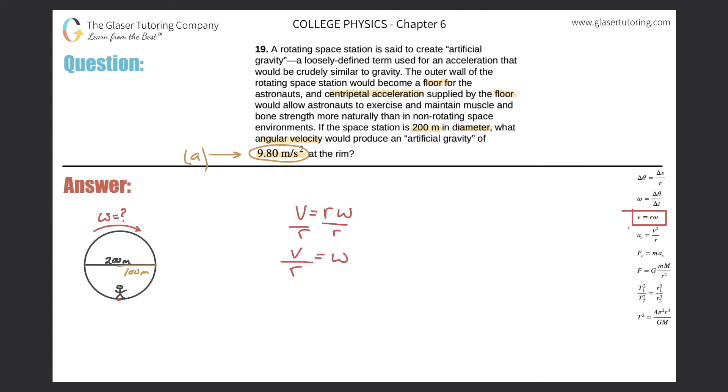Now the only problem with that is that it's not solved for the linear velocity. No big deal though. We know algebra. So let's simply take that formula and solve it for v. When we do so, cross-multiply these two terms, so that becomes ac times r is equal to v squared. Now just take the square root of both sides. So we see that the square root of the centripetal acceleration multiplied by the radius will give me the velocity.